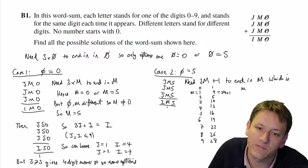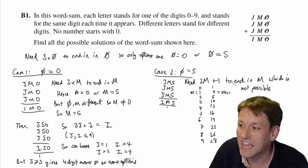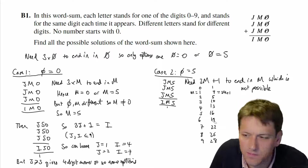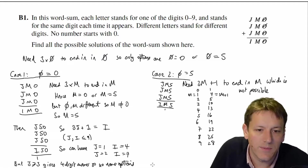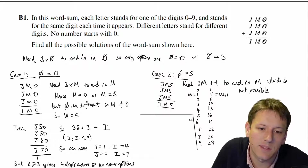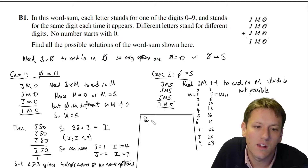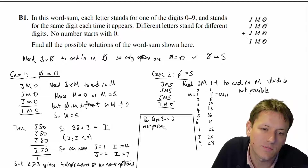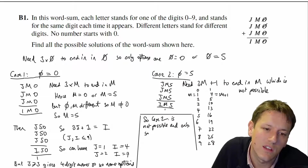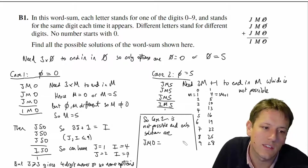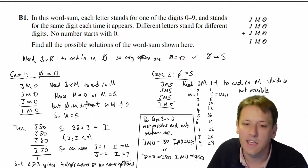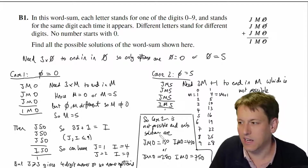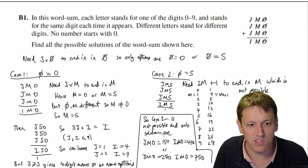So there are no possible digits for M in this case — Case 2 is impossible. My final conclusion: Case 2 is not possible, and the only solutions are that JMO = 150 and IMO = 450, or JMO = 250 and IMO = 750. Always important to give a final answer with a clear conclusion to show you've finished the argument.